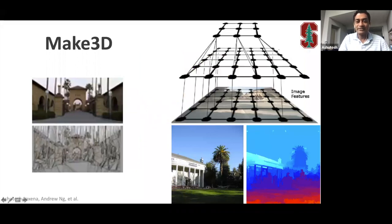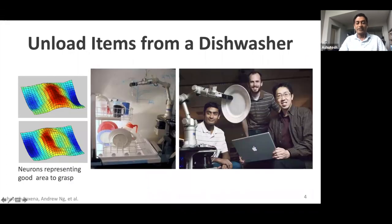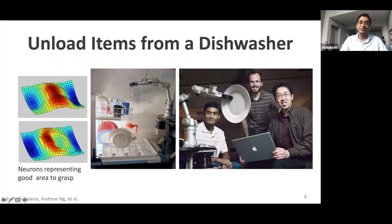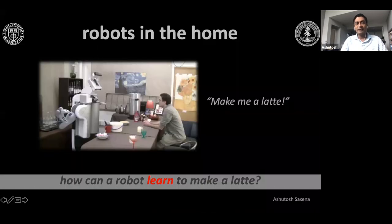That work has huge applications in robotics as well as computer graphics. Another area we touched was household and industrial robots. Instead of programming robots manually, we came up with learning algorithms that let robots watch and learn from large amounts of data. By looking at large amounts of 3D and image data, robots could do interesting things — for example, unload items from a dishwasher.